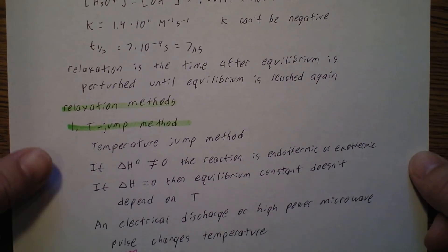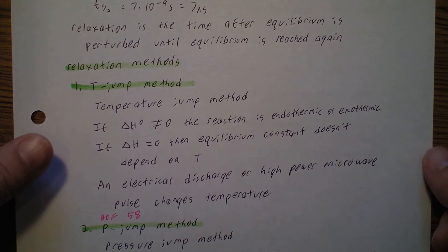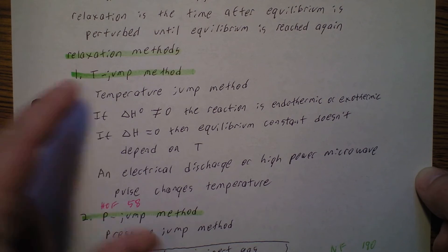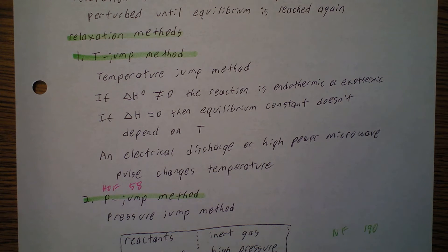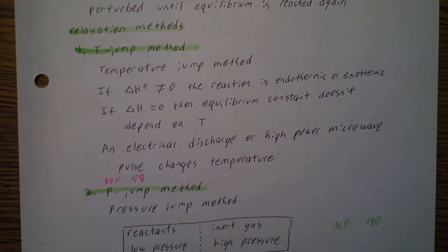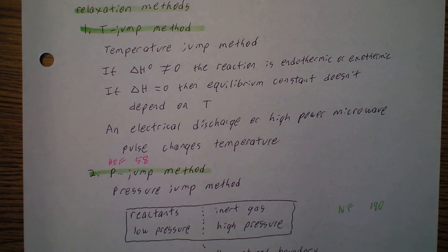There are different methods of doing this. One is called the T-jump method, which stands for temperature jump — capital T is temperature. So if the standard enthalpy change is not equal to zero, then the reaction is endothermic or exothermic. If the enthalpy change equals zero, then the equilibrium constant doesn't depend on temperature. If we do an electrical discharge or a high-power microwave pulse, that can change the temperature very quickly.